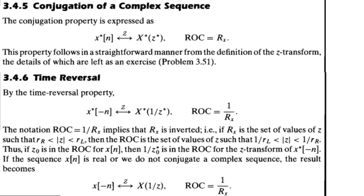In the time reversal property, if time is reversed and x(n) is conjugated, the Z-transform will be conjugated and in place of Z we will have 1/Z conjugate. Because of this, the region of convergence will be opposite — the region of convergence which was previously Rx will now be 1/Rx.